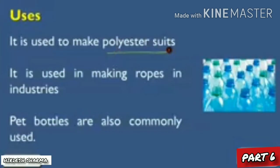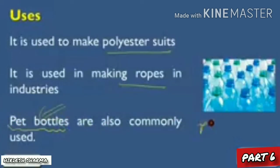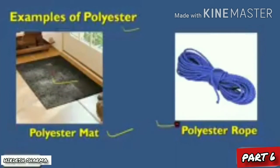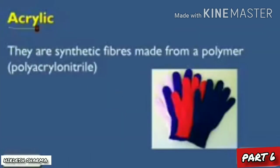Polyester is used in suits and ropes. As you can see, PET bottles are a common use. We can also make mats — as you can see in the figure, there is a beautiful mat on the floor made of polyester. We can also make ropes — as you can see in the figure, a quite strong rope. These are a few examples of items made from polyester.